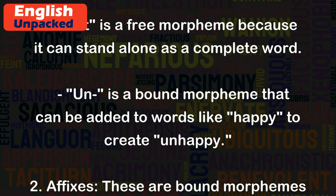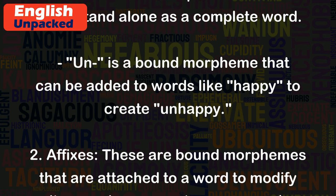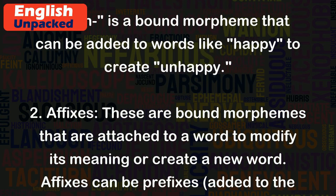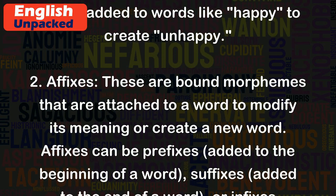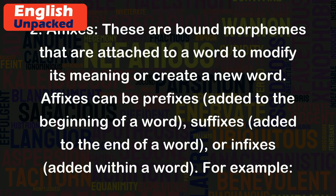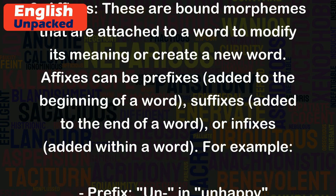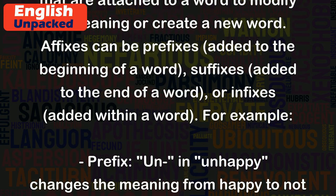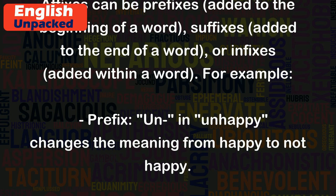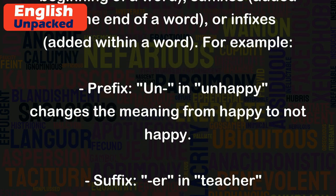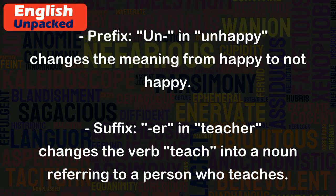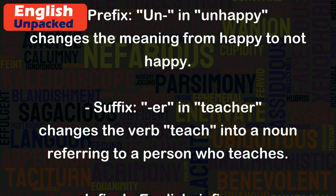Affixes are bound morphemes that are attached to a word to modify its meaning or create a new word. Affixes can be prefixes added to the beginning of a word, suffixes added to the end of a word, or infixes added within a word. For example, the prefix 'un' in 'unhappy' changes the meaning from happy to not happy. The suffix 'er' in 'teacher' changes the verb 'teach' into a noun referring to a person who teaches.